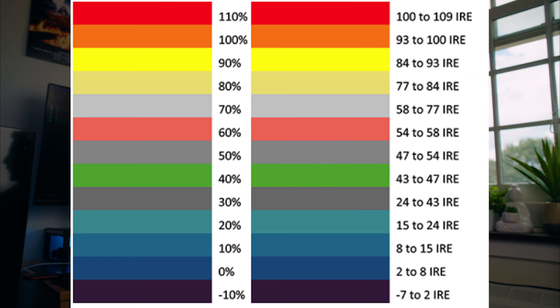First is false color. False color basically makes each different brightness value of your image a different color. For example, 10 IRE — which would be a shadow — is purple or blue, while skin tones would be pink and gray, and anything that's blown out or too bright is yellow and red. This is a great way to quickly tell if you're losing any detail in the highlights or shadows by just toggling this on and seeing if there's any purple or red in the image. It's often really hard to tell by just looking at the LCD, so I highly recommend using this to check your exposure.